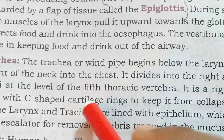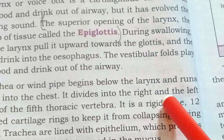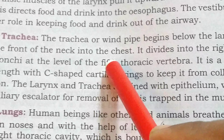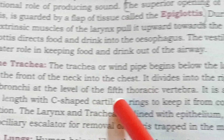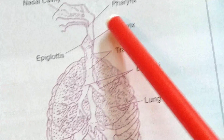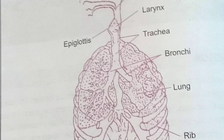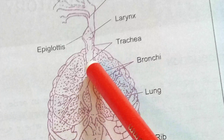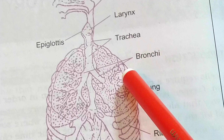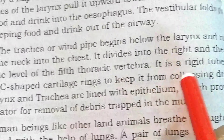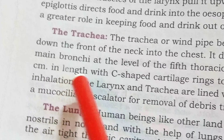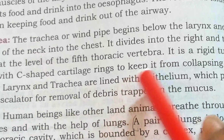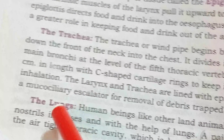The trachea, or windpipe, begins below the larynx and runs down the front of the neck into the chest. It divides into the right and left main bronchi at the level of the fifth thoracic vertebra. It is a rigid tube 12 cm in length with C-shaped cartilage rings to keep it from collapsing during inhalation.